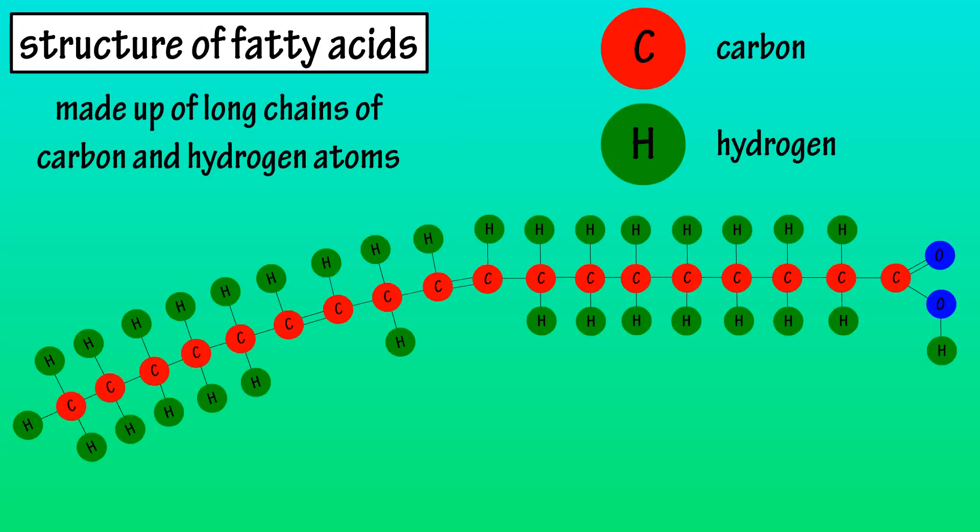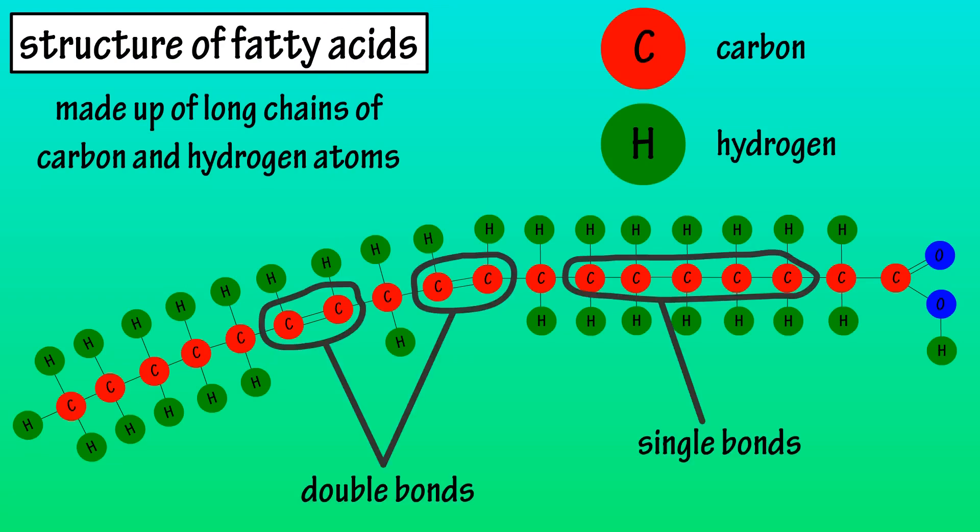The structure of fatty acids. Fatty acids are made up of long chains of carbon atoms and hydrogen atoms. Some carbon atoms are linked by single bonds and others by double bonds. These bonds determine which type of fatty acid the molecule is classified as.